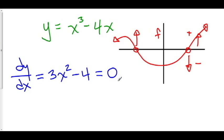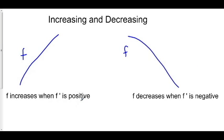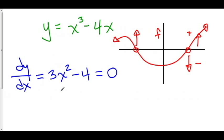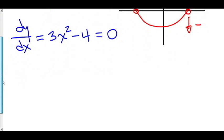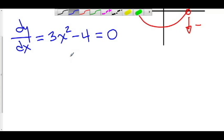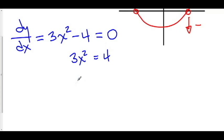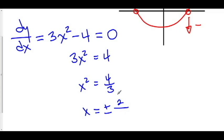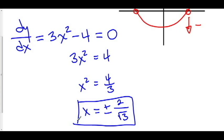So what we can do is set our derivative equal to 0, since the whole point is to figure out where our derivative is positive and where it's negative. We'll set our derivative equal to 0, plot those points, and look in between them. Setting 3x squared minus 4 equal to 0: adding 4 to both sides gives 3x squared equals 4, so x squared equals 4/3, and taking the square root yields x equals plus or minus 2 over root 3. These are the two points where the derivative equals 0.